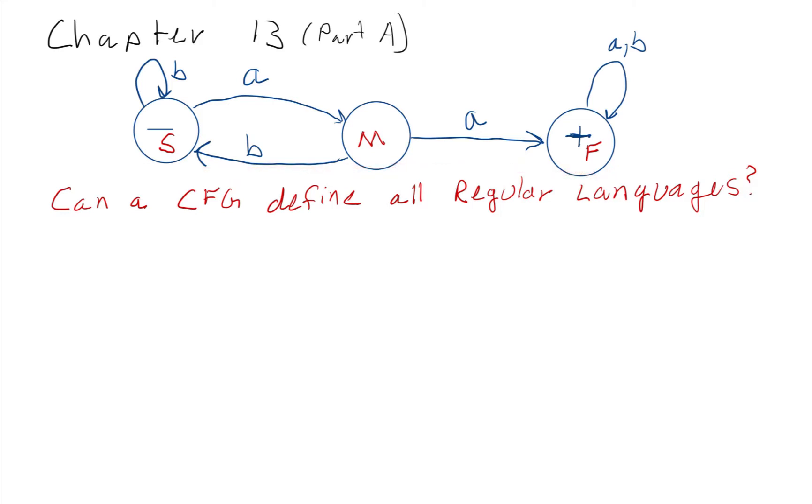This is a finite automata that accepts all words with two A's in them. When we read one A and then another A right after it, we're stuck in the final state, meaning we accept the word. And again, this is an example.